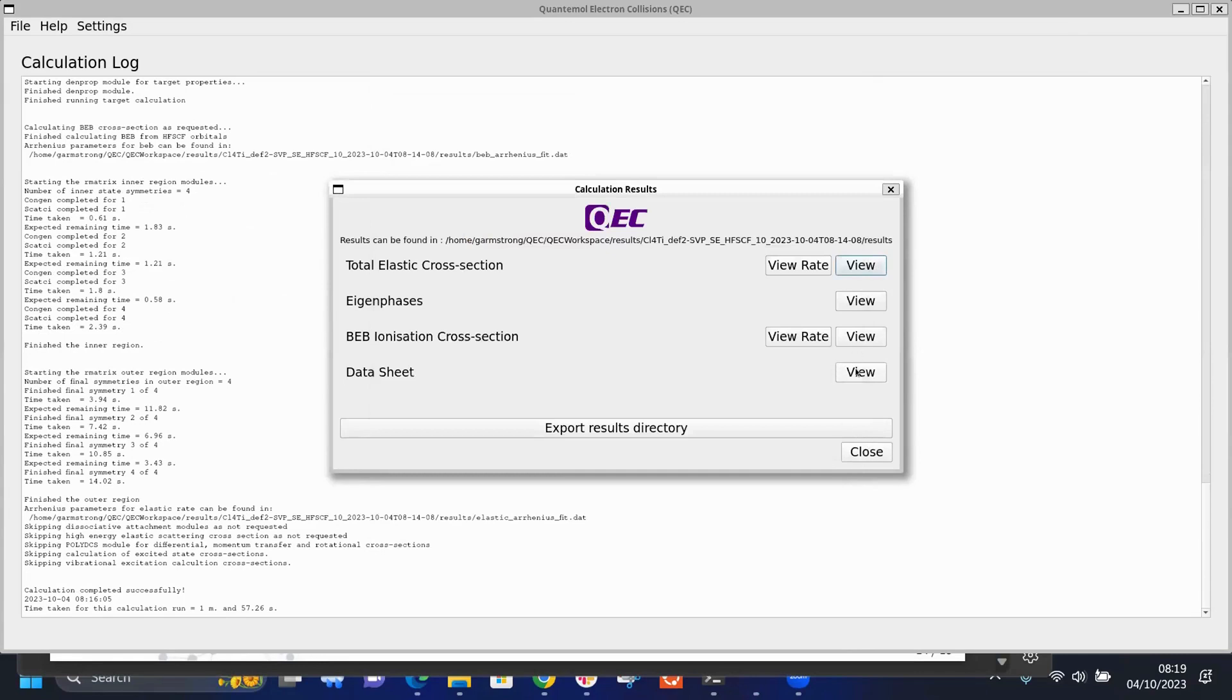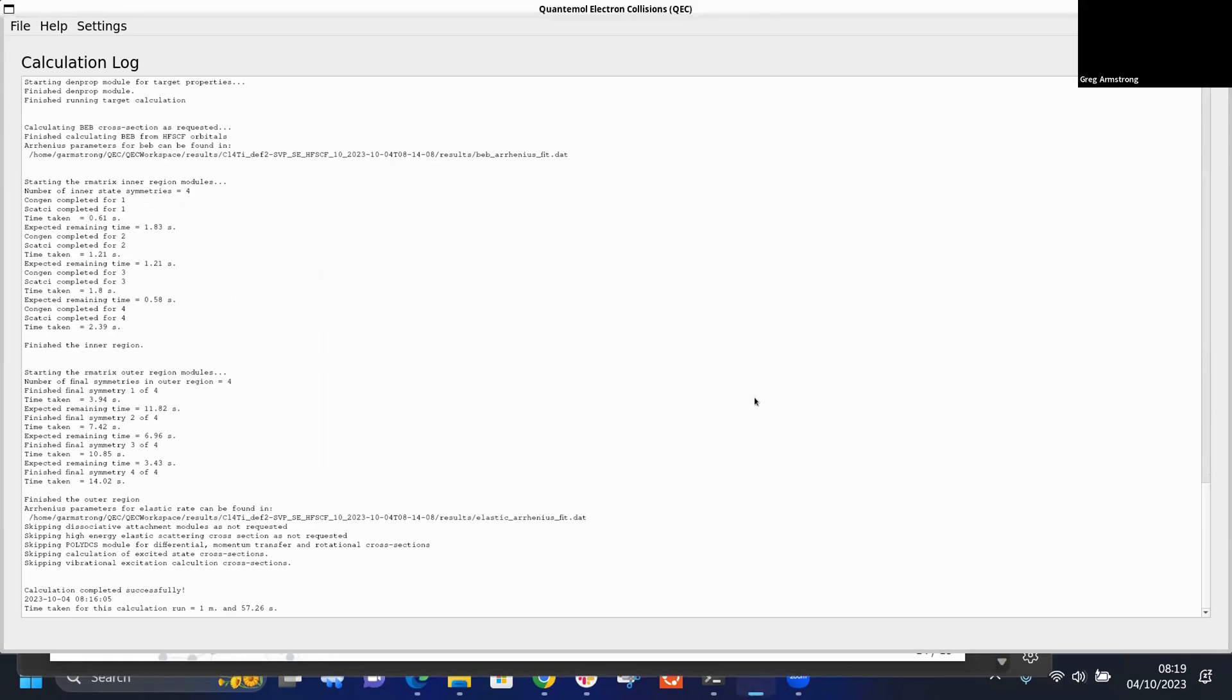Finally it produces the results which you can view. It also produces a data sheet with the main information. That is a QEC calculation carried out with both isotopes and new basis sets as a quick demonstration of the new capabilities in QEC. That concludes my talk.